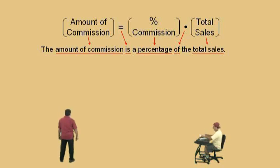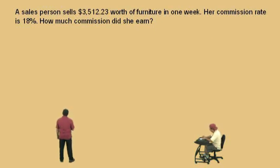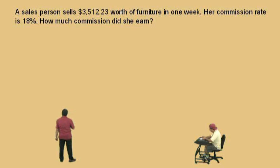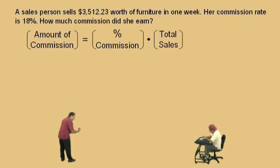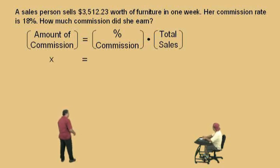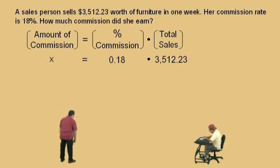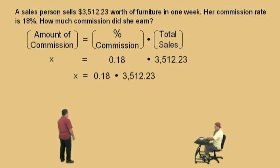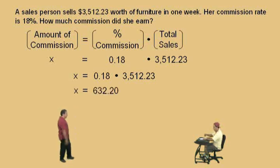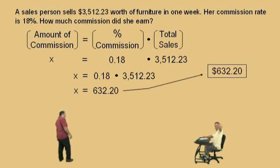All right Charlie, here we go. A salesperson sells $3,512.23 worth of furniture in one week. Her commission rate is 18%. How much commission did she earn? Here's our format: the amount of commission is equal to the percent commission times the total sales. We're looking for the amount of commission — that's our X. What's our percent commission as a decimal? 0.18. What's our total sales? $3,512.23. To calculate X, you just multiply 0.18 times $3,512.23. What do you get, Charlie? $632.20. So her commission earned was $632.20.